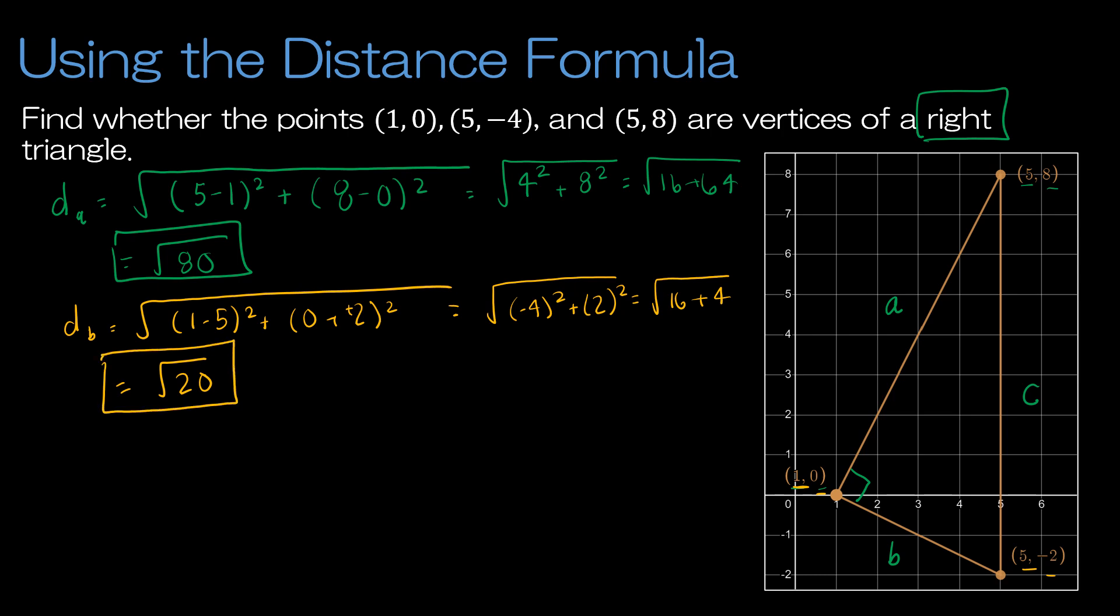And now for our last one, I'm looking at the distance of C. Now could I use the distance formula? Sure. But if you'll notice, it's right on a grid line. So I can just count if I want to. Essentially, I'm going from 8 to -2. So that's a distance of 10. So feel free to verify that with the distance formula. But I would just end up with the square root of 10 squared, which is 10.